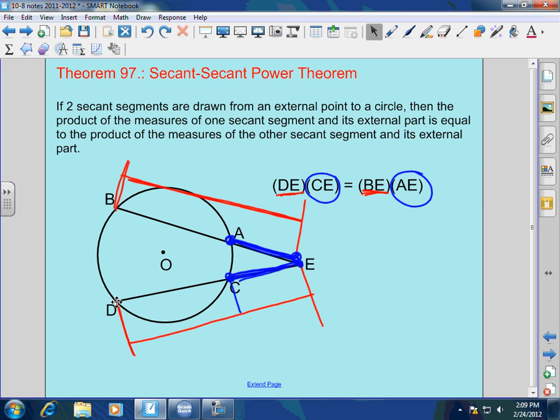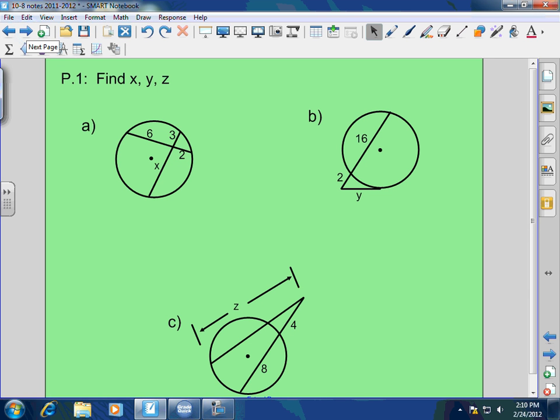You know everything there is to know about a circle now. And it's a lot. You know about arcs and angles and inscribed angles and chords and diameters and circumference, arc measure, arc length, sector area. I mean, there's nothing you don't know now about a circle. Very proud of you. So let's do some examples. Let's just knock this out.